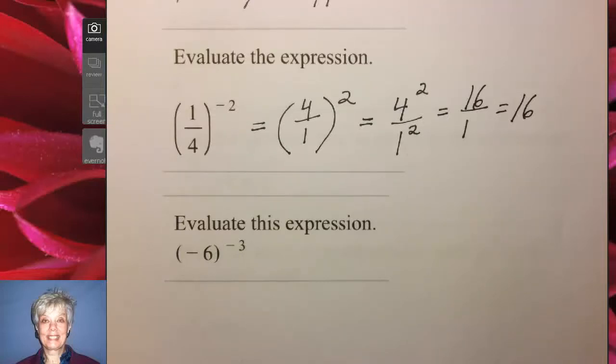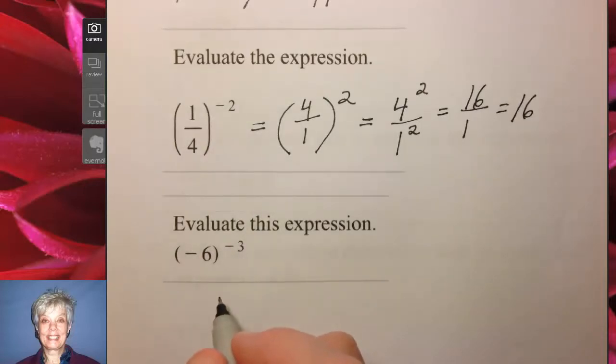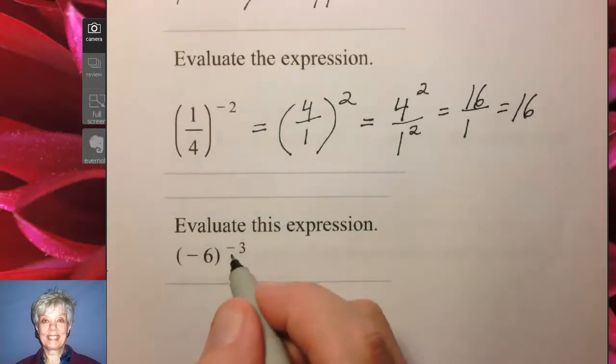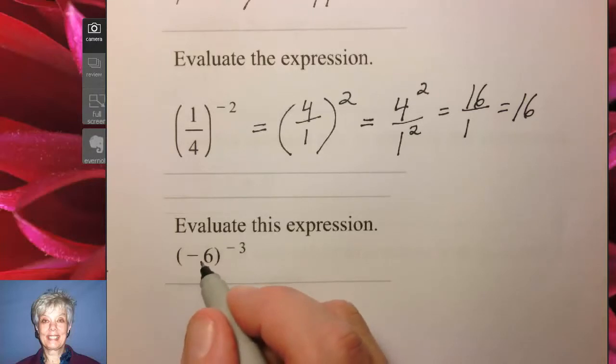Now here is something very important. This is negative 6 raised to the negative 3 power, and a lot of people make a mistake by saying, well negative times negative is positive. Not here. The sign on the power has nothing to do with the sign on the number.